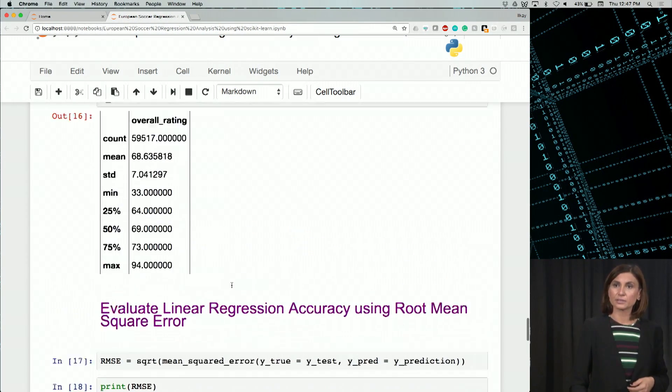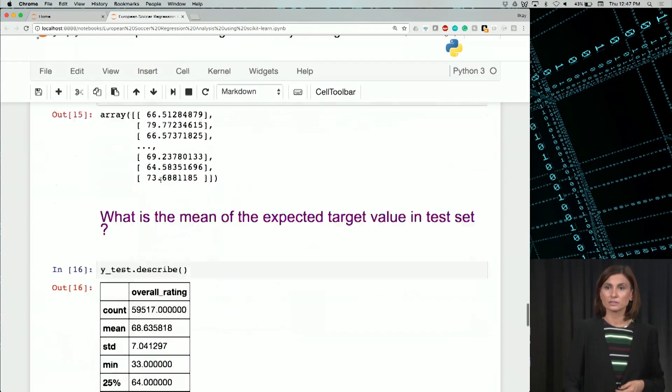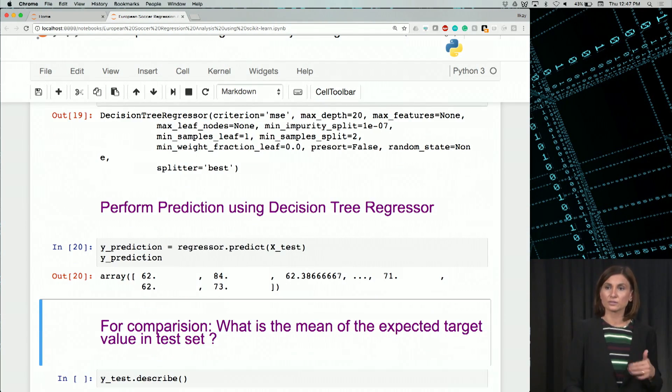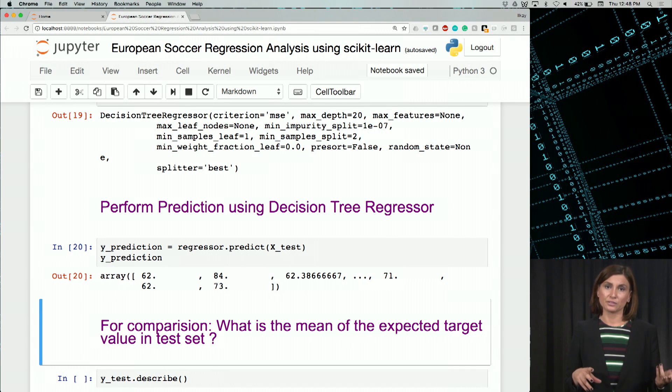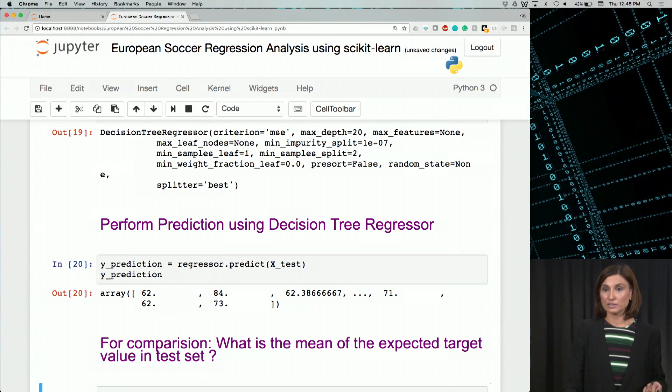And we see the values changed a bit, right? We have the 66 here and 62 and things like that. To get an idea of the RMSE, we note that a root mean square error of 100, for example, would be too high because our mean is 68. So let's run this.